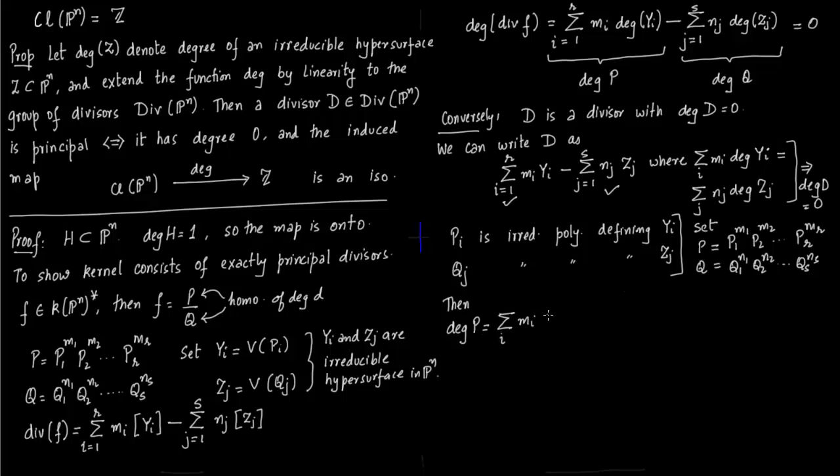So what is degree of P? Degree of P is nothing but the sum—you take the degree of individual polynomial values. But P_i is equal to the hypersurface Y_i because P_i generates this hypersurface Y_i. And this is equal to sum of N_j times degree of Z_j by the star equation, because that is what we started with.